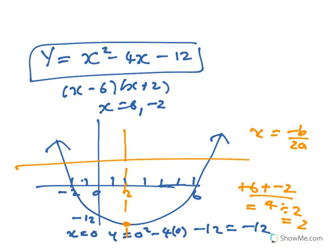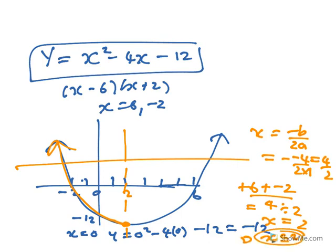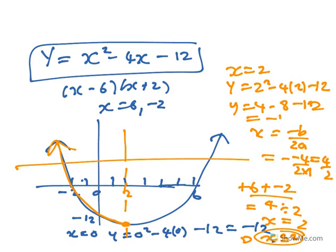You could also find the vertex using minus b over 2a: minus minus 4 over 2 times 1, which is 4 over 2, so x equals 2. If we restrict the domain so that x is less than or equal to 2, let's find the range. Putting x equals 2: y is 2 squared minus 4 times 2 minus 12, which is 4 minus 8 minus 12, that's 4 minus 20 equals minus 16. That means the vertex point is (2, minus 16), so the range would be y greater than or equal to minus 16.